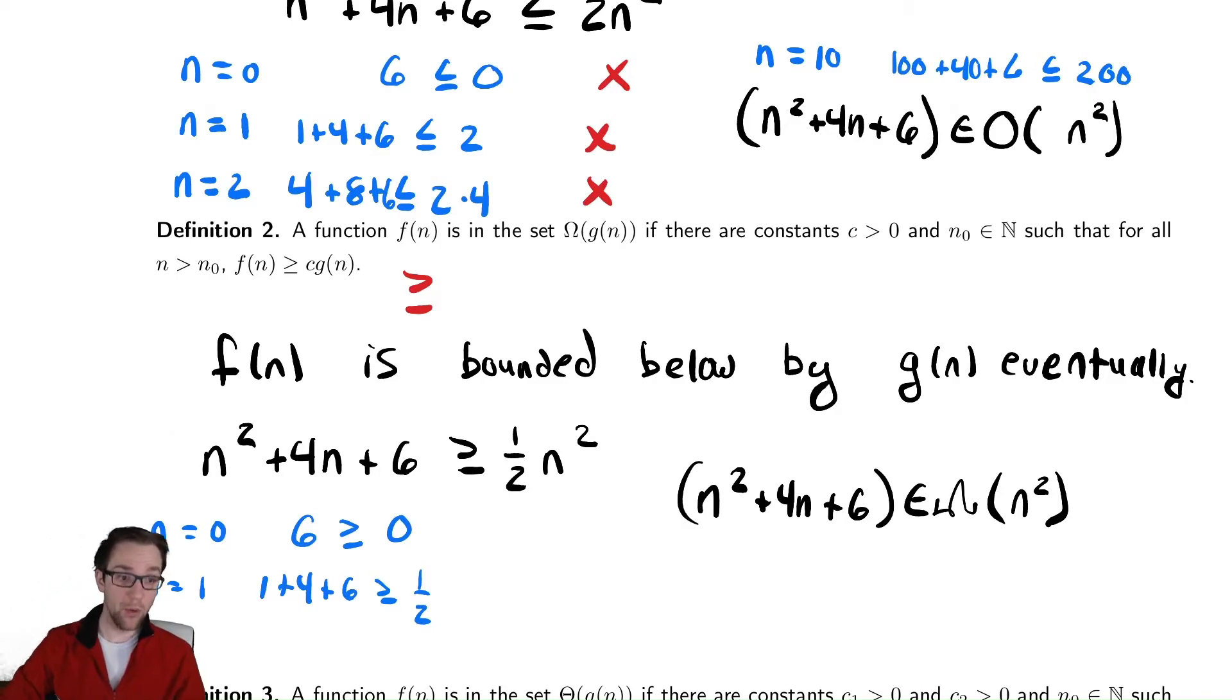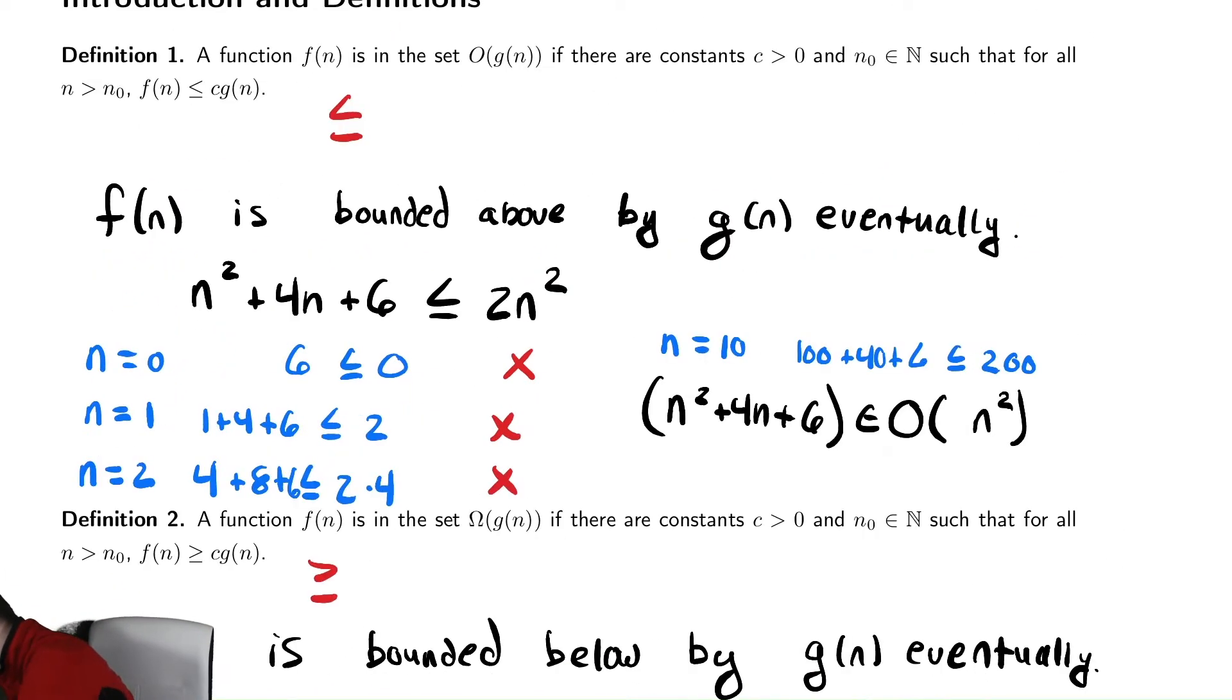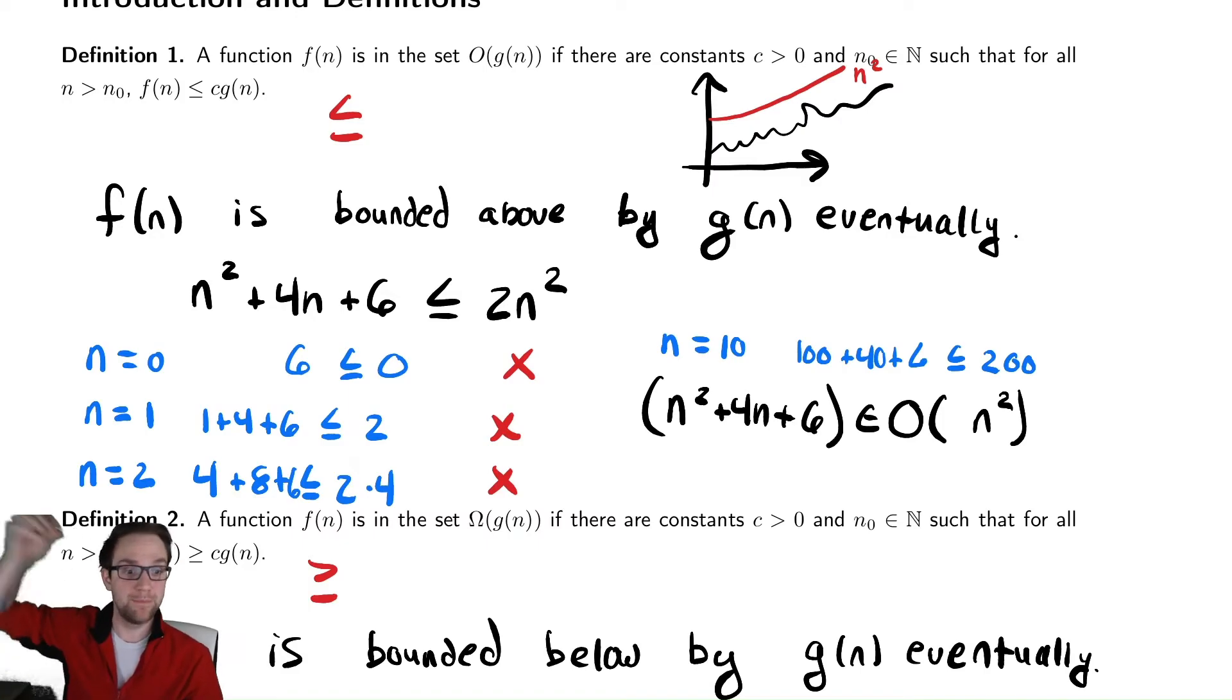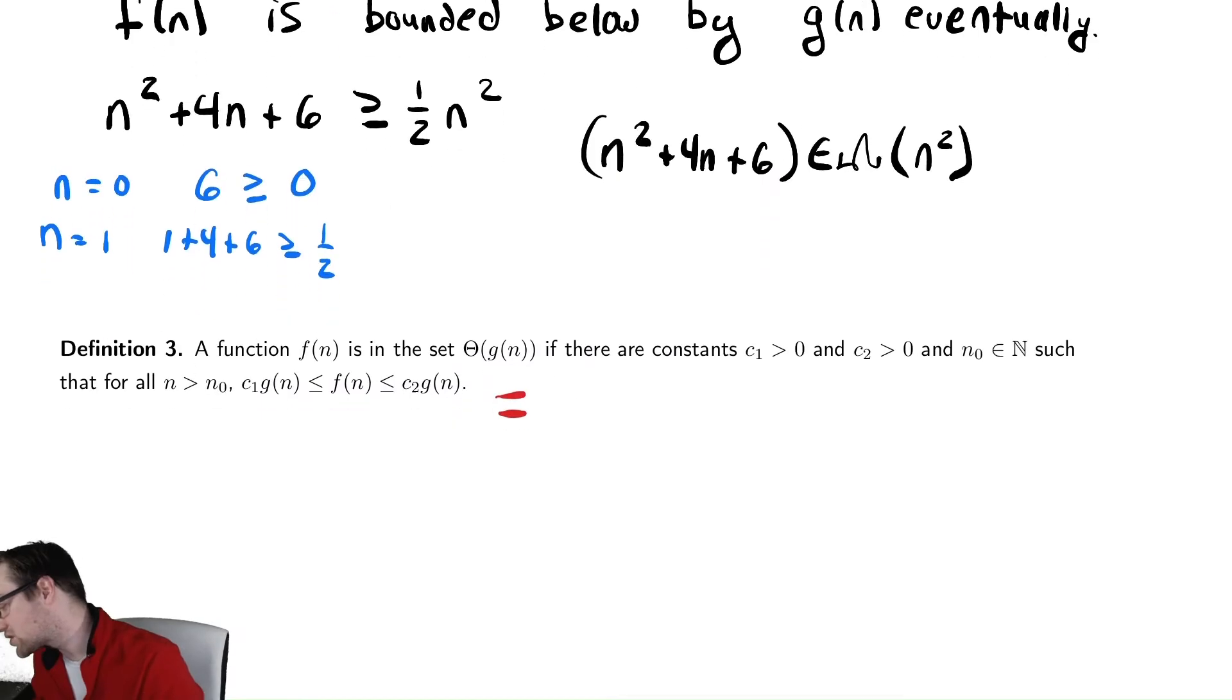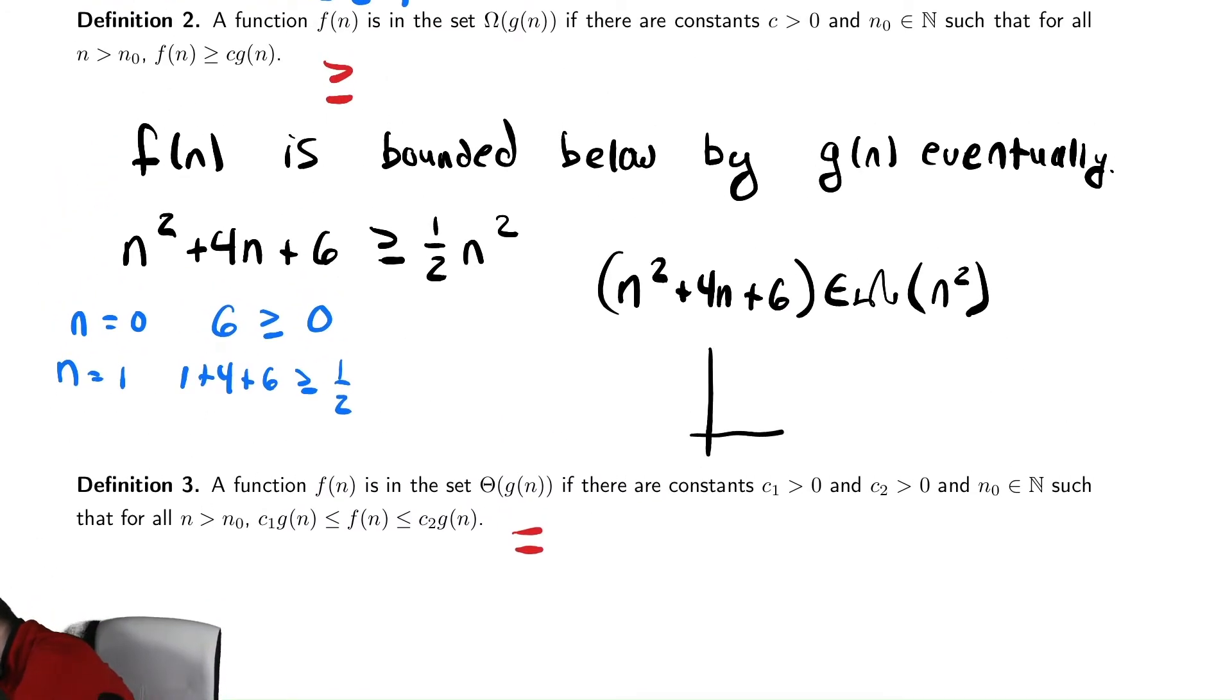We can bound things above and below to say it grows no faster than this function and grows no slower than this function. Graphically, what we're trying to do is say we have some horrible mess of a function that does some random nonsense and looks terrible. However, there might be a really nice function like n², which is above it the entire time, or eventually at least. This function up here is our nice function n², and the horrible squiggly line is whatever we bounded above by n². The exact same picture can be drawn down here, but we have our horrible mess of a function that is bounded below by n², or some constant times n². We want to be able to say that this horrible mess is always bigger than something and always smaller than something, with maybe a little asterisk that always means eventually, but there's infinitely many values for which it's true.